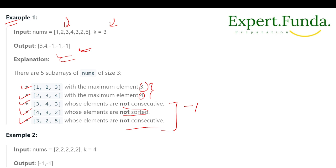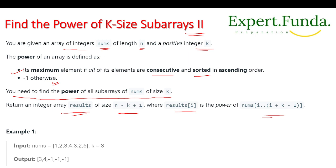The goal or intuition of this program is: we are going to find the last element of every k-element consecutive subsequence within the array. For example, for one, two, three, the last element is three. We need to find this for every k-element window where the elements are consecutive and sorted.